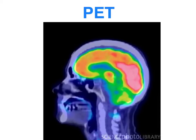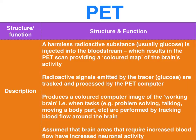Moving on to the PET scan: the PET scan provides us with structural and functional information by utilising a harmless radioactive substance, usually glucose, which is injected into the bloodstream, providing a coloured map of the brain at work. The radioactive signals emitted by the tracer are processed by a PET computer when the patient is doing a cognitive task such as speech, and it is assumed that the brain areas with increased blood flow are responsible for that cognitive task.